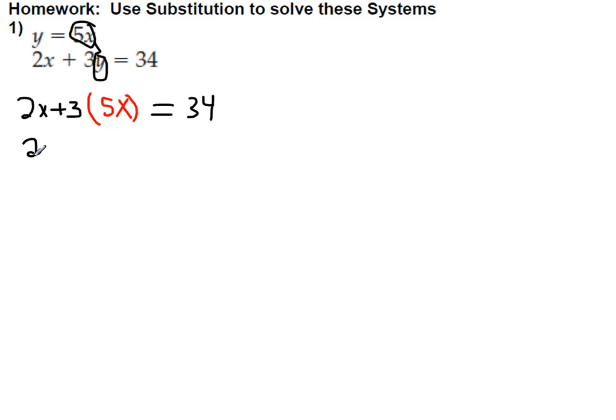From there, you have to multiply. 2 times 5x is 15x. And then on the left side there, you should have added 2x and 15x is 17x.